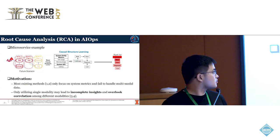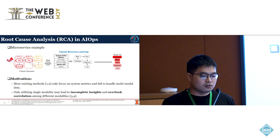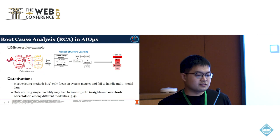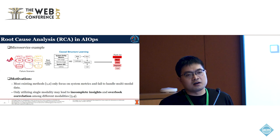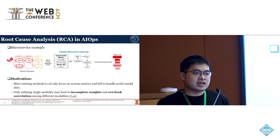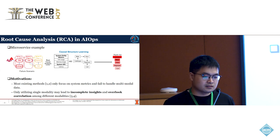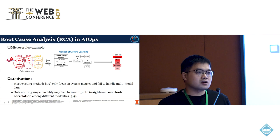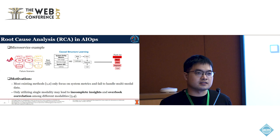Root Cause Analysis, or RCA, plays a very important role in maintaining the high performance of the microservice system. When the system failure occurs, we need to locate the system failure in a very short time to reduce the potential loss. However, manually pinpointing the root cause can be time-consuming, labor-intensive, and prone to error. To address this issue, many automatic root cause analysis methods are proposed, most of which are typically constructing the causal graph based on the system entity metrics.